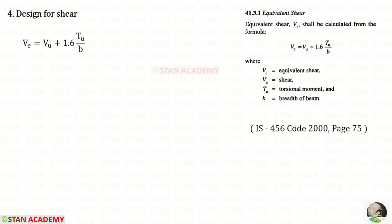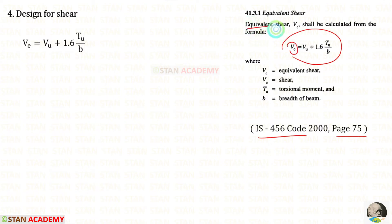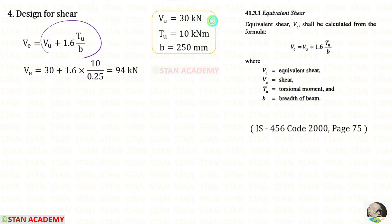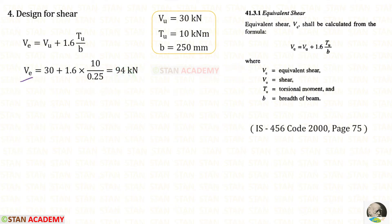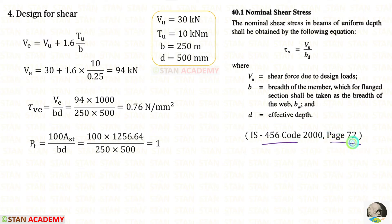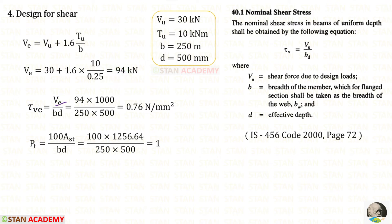Now we are going to do the design for shear. In the code book from page number 75, we copy the formula for equivalent shear VE. Applying all values, width B is 250 upon 1000 = 0.25 meter. For VE, we get 94 kilo Newton. From page number 72, we copy the formula but apply tau-BE instead of tau-VE. VE is 94 kilo Newton; 1 kilo is 1000. For tau-BE, we will get 0.76 N/mm².